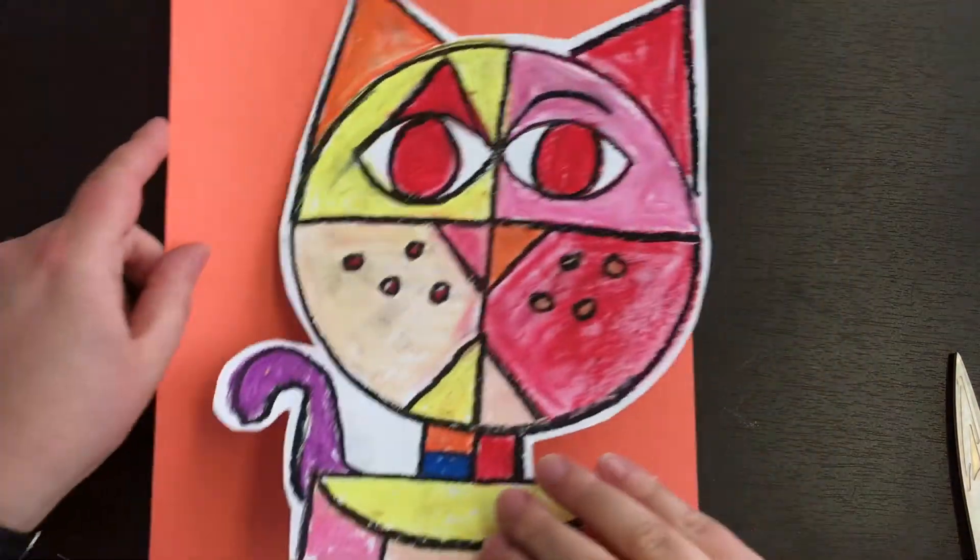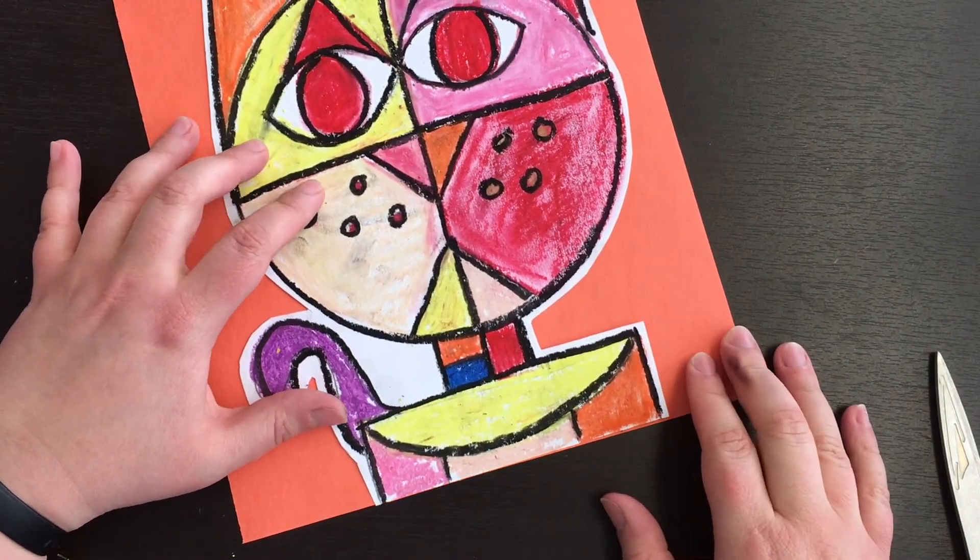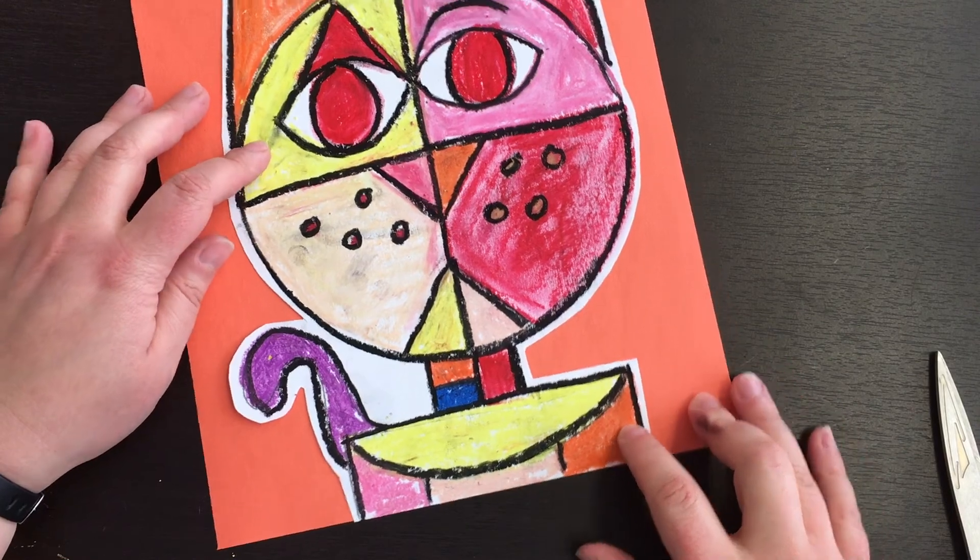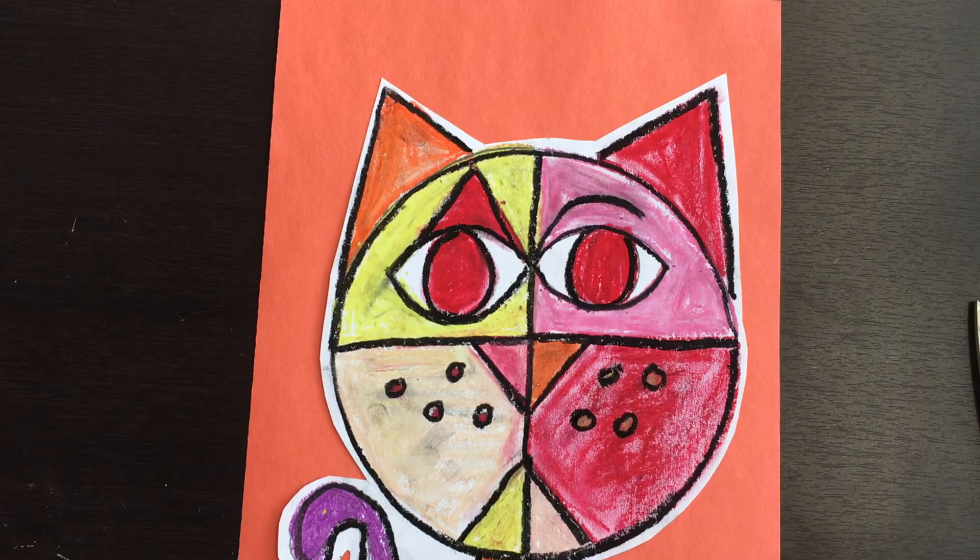So my very last step is I have to glue it to my construction paper. Now we don't want our cats to be floating. So you're just going to make sure that you glue it right along the bottom. And then once it's all glued down, you are done.